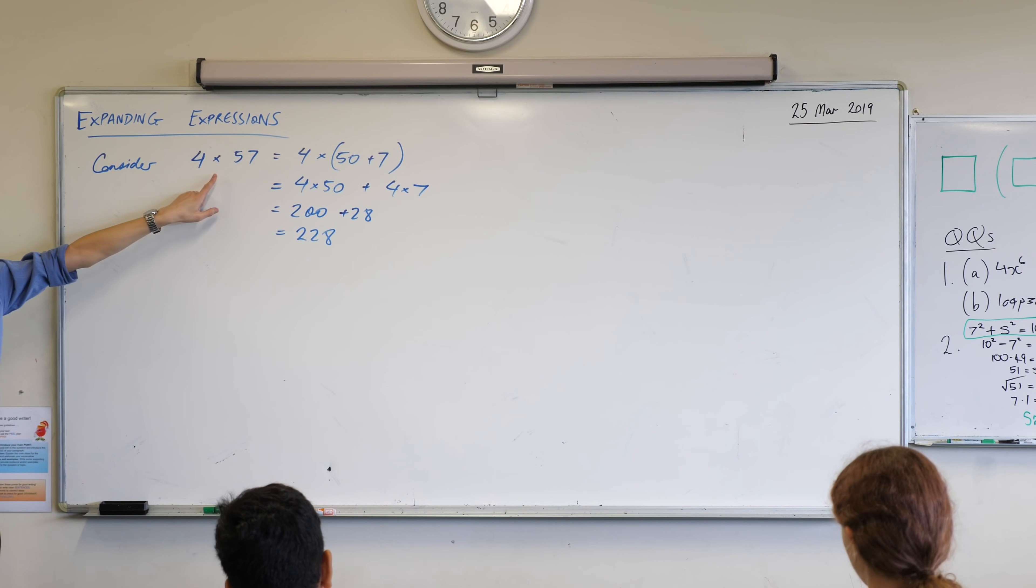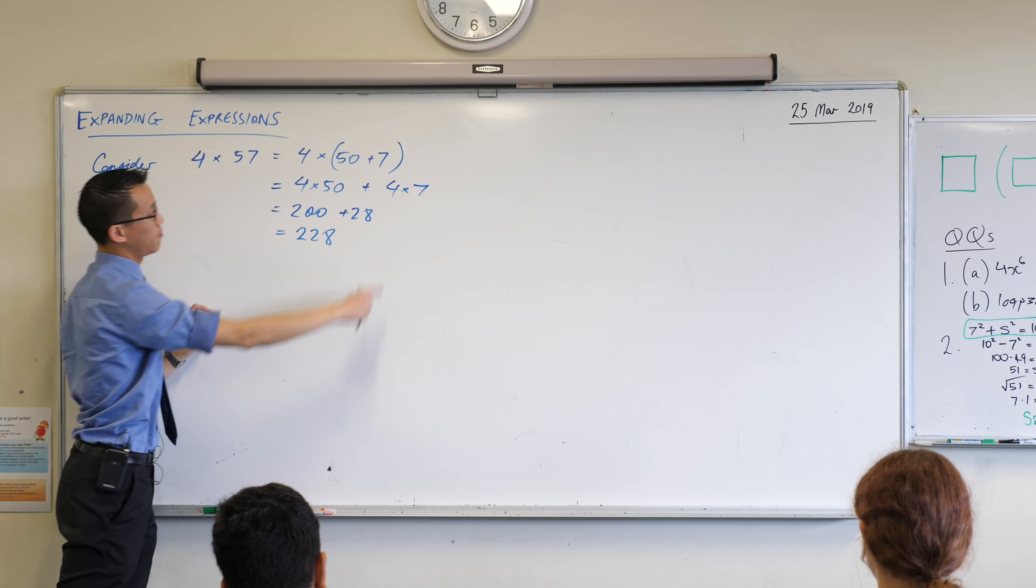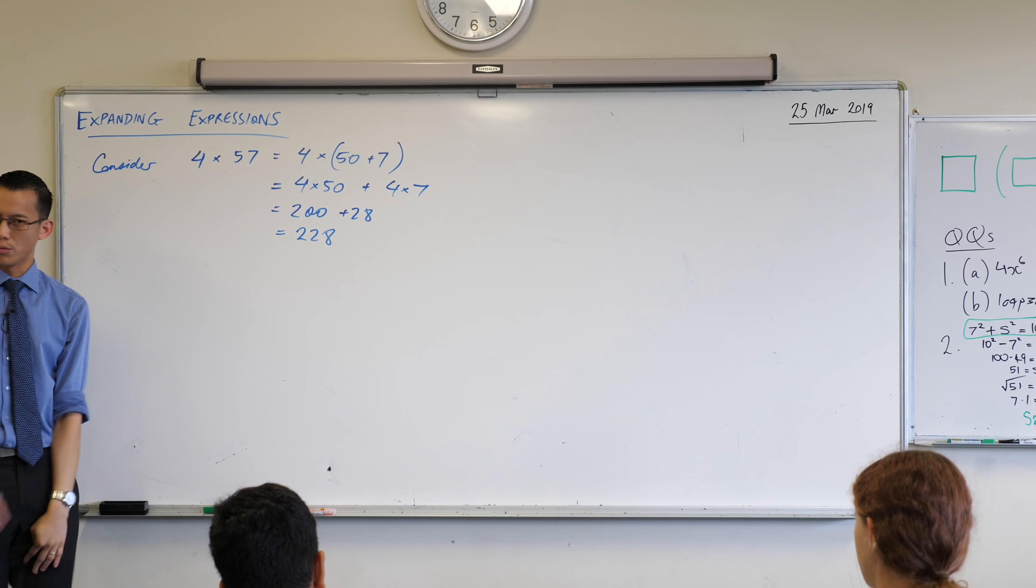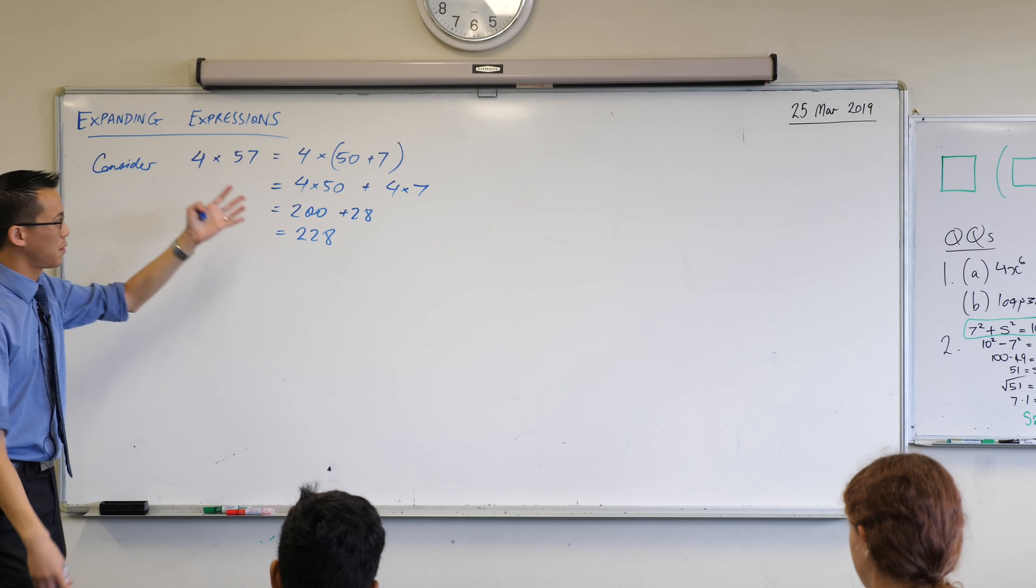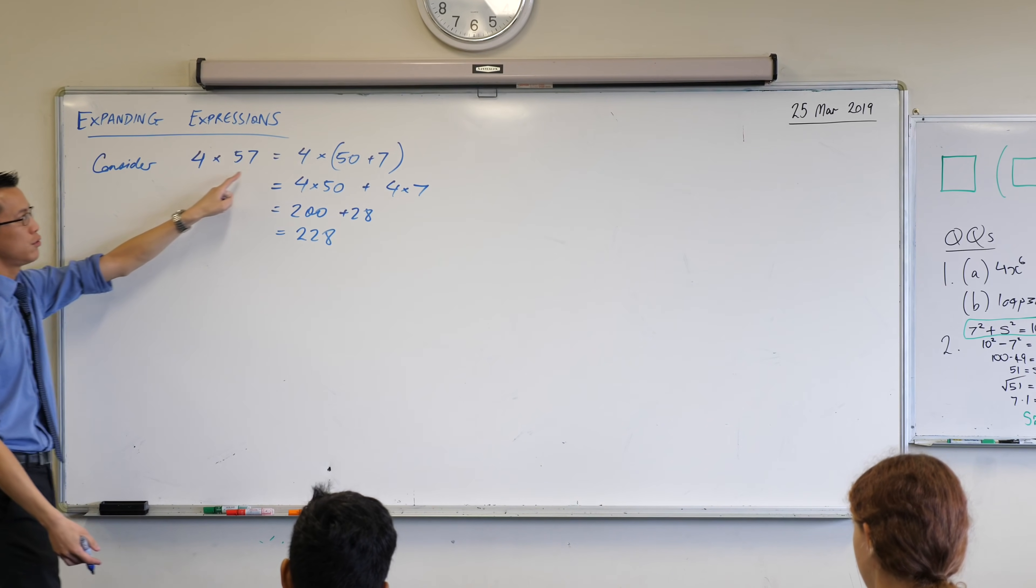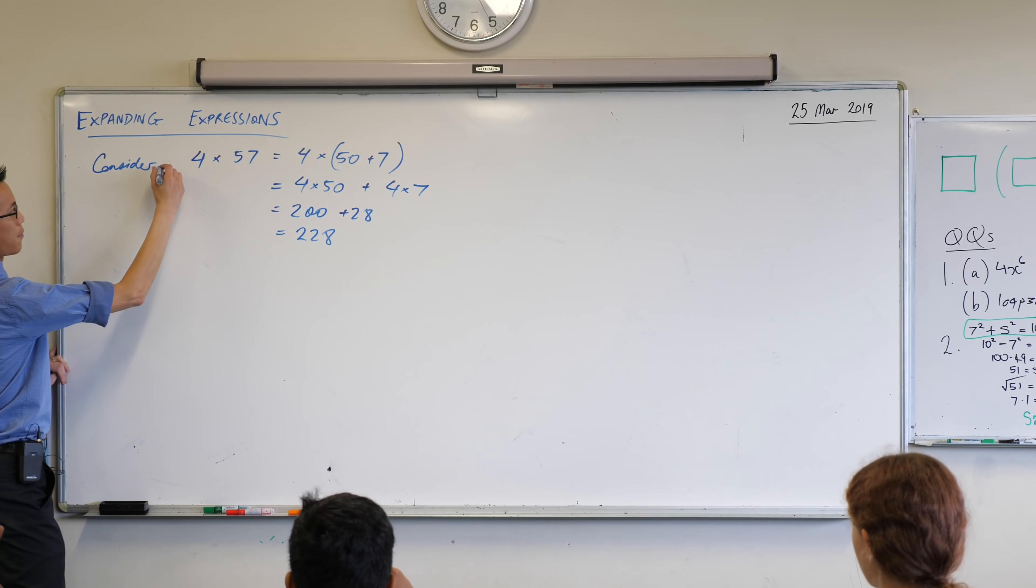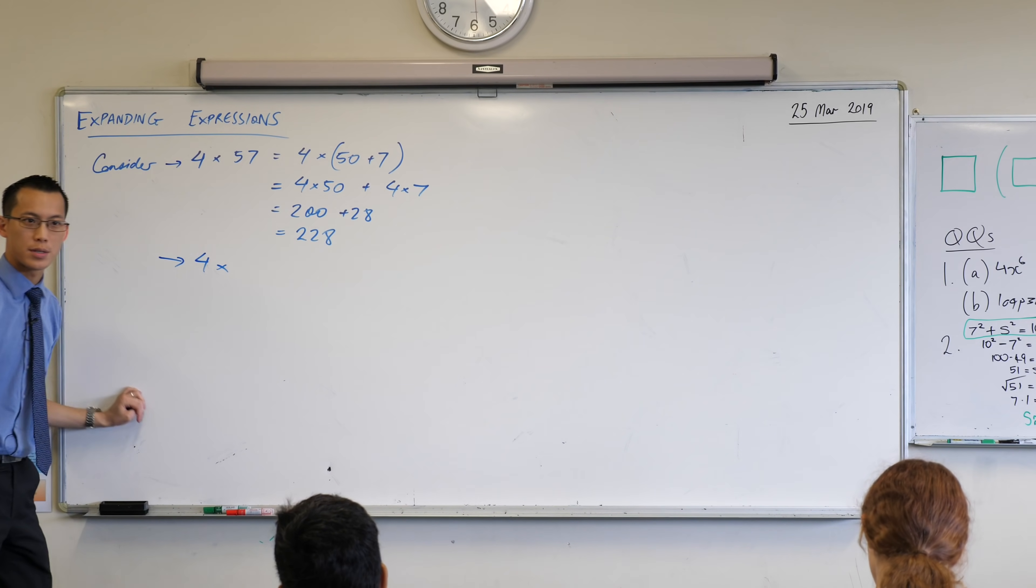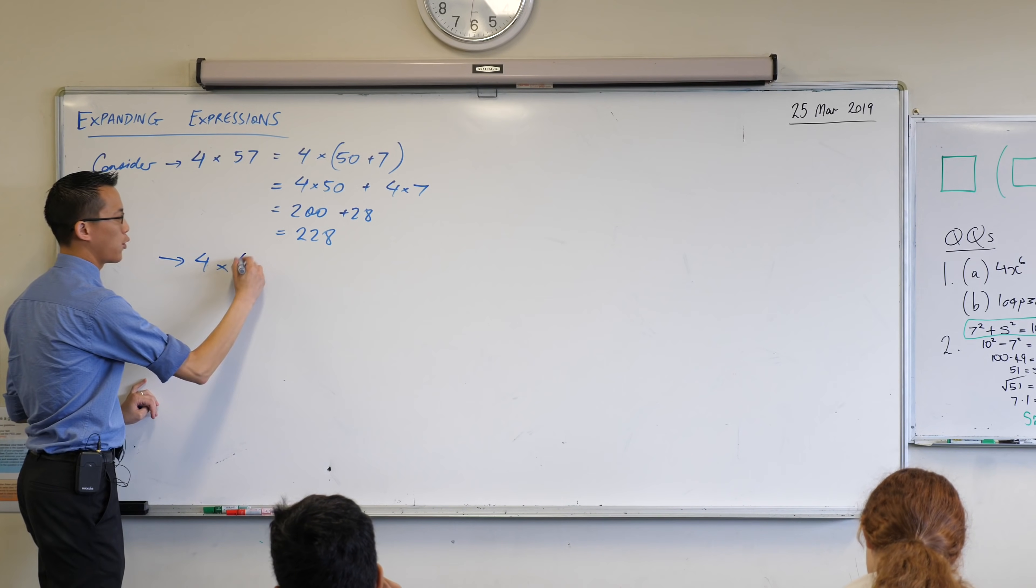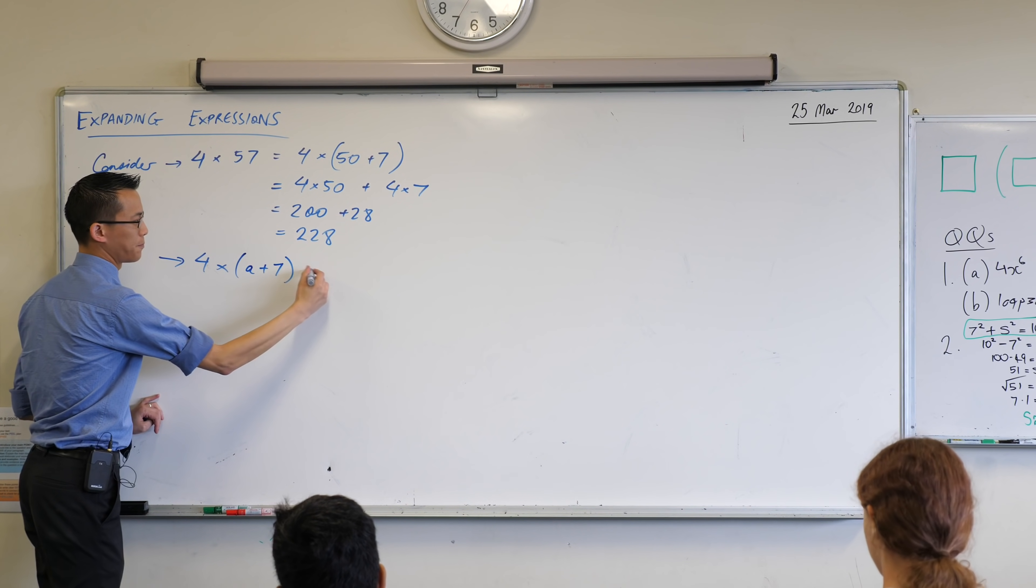Now, what we've done here, this strategy of breaking apart 57 into 50 plus 7, we didn't need to do it with numbers. We could have just reached for our calculator. But other times when we're dealing with algebra, we kind of do need to think of it as two separate things. So now I want you to further consider this. Let's consider if I don't have 4 times 57, but if I have 4 times something like A plus 7.